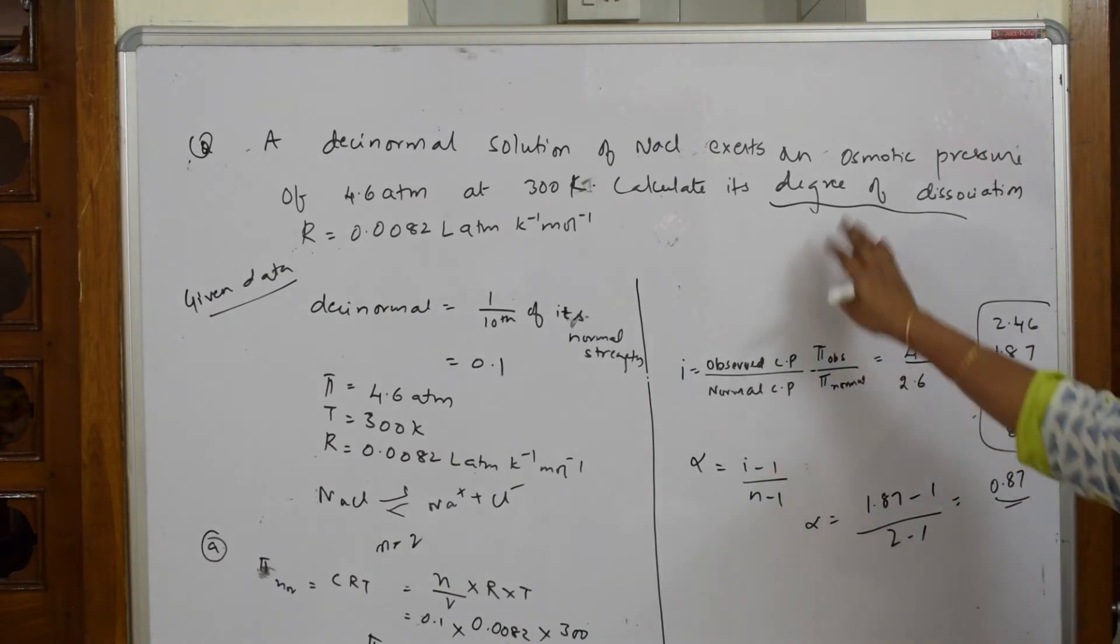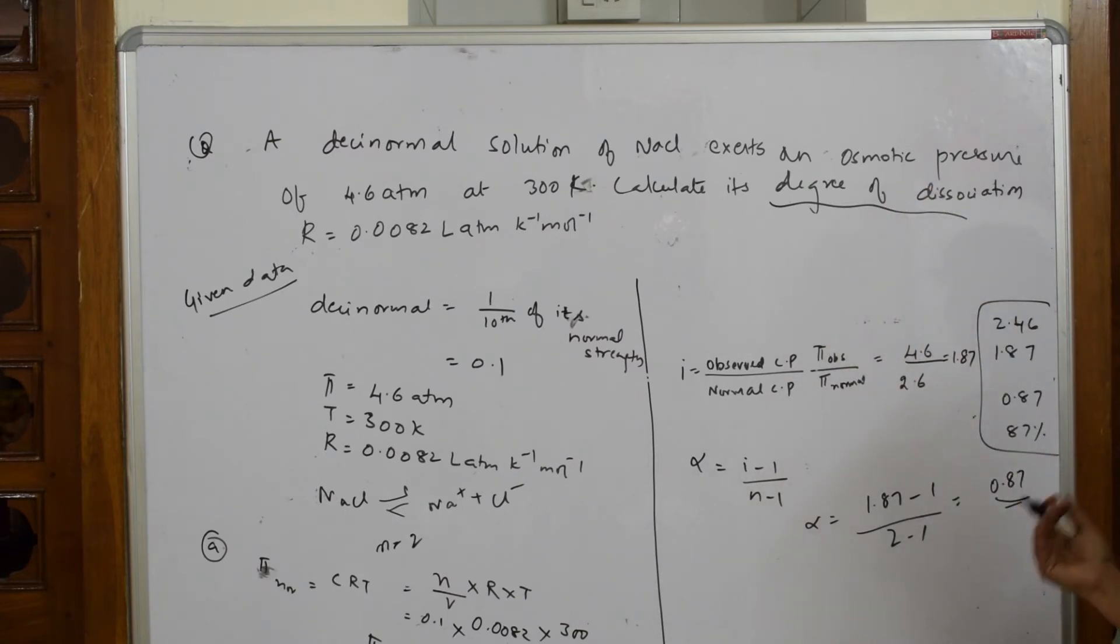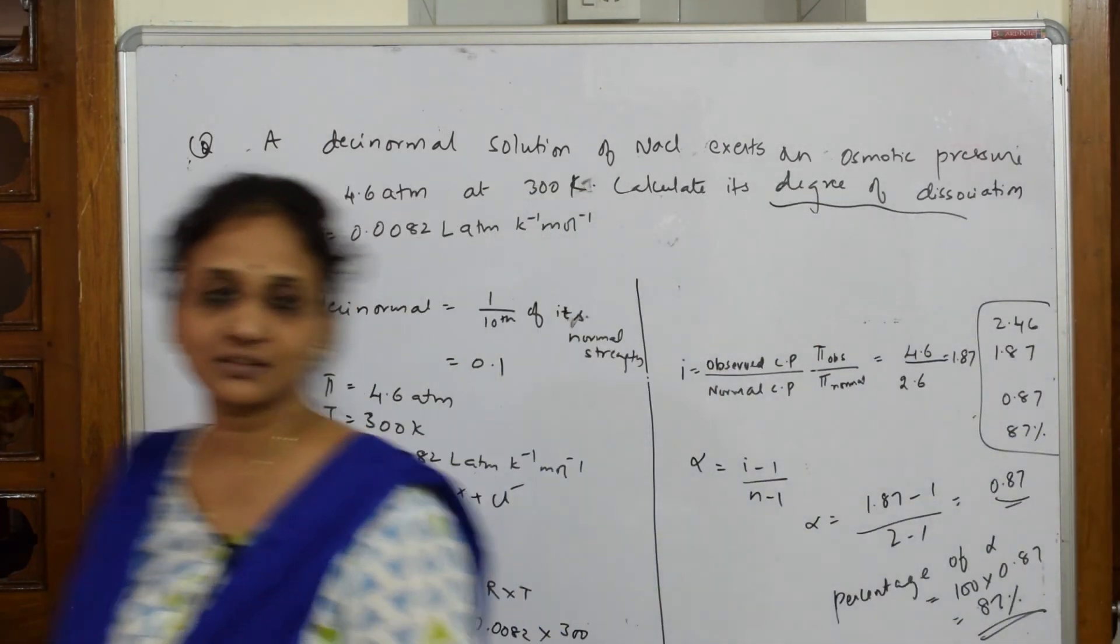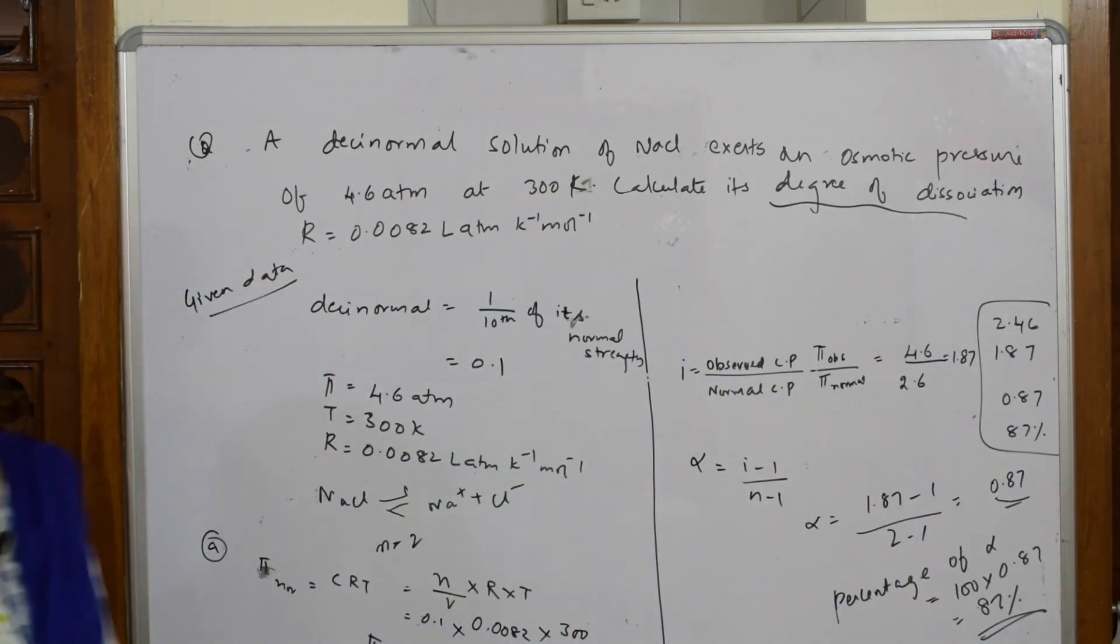Still I am not done because they have asked me to calculate the degree of dissociation the percentage. How much has dissociated? Because from the total I have to find out. So percentage is equal to, because how much percentage is dissociated, percentage of alpha is equal to 100 into 0.87, that is equal to 87%. That means 87% has dissociated. That is 87% of NaCl has dissociated. This is how you are going to find simple.